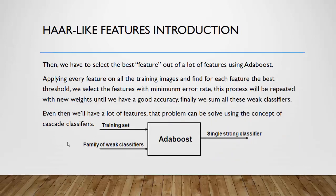Then we have to select the best feature or a lot of features using AdaBoost. Apply every feature on all trained images and find for each feature the best threshold. So we select the feature with minimum error rate. This process will repeat over and over again, with new weights, until we have a good accuracy. Finally, we assume all these weak classifiers. Even then, we will have a lot of features.